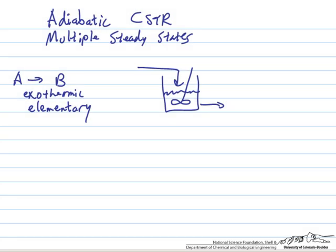Okay, so in this problem we're going to take a look at multiple steady states in CSTRs. This is information that's available in most textbooks, for example, Fogler.